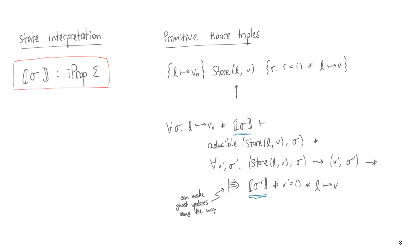I want to take a step back and notice that we assume the state interpretation holds at the beginning and then we prove that it holds afterward. The reason why this is sufficient is because store is atomic. If store were not atomic, then this would not be sufficient.